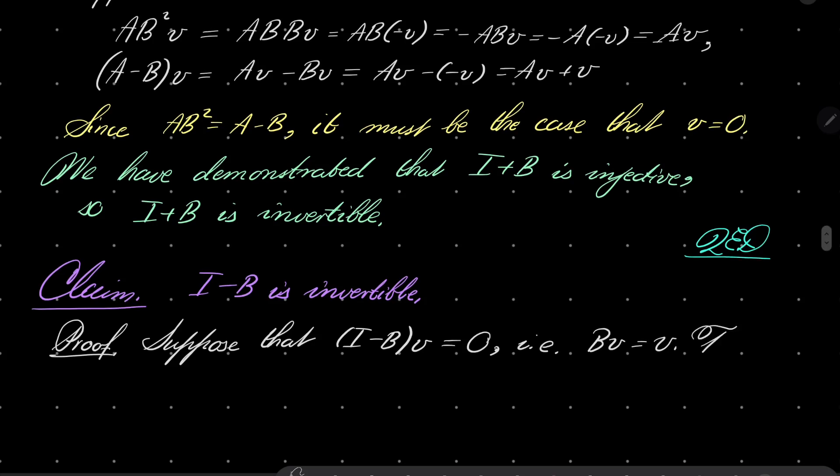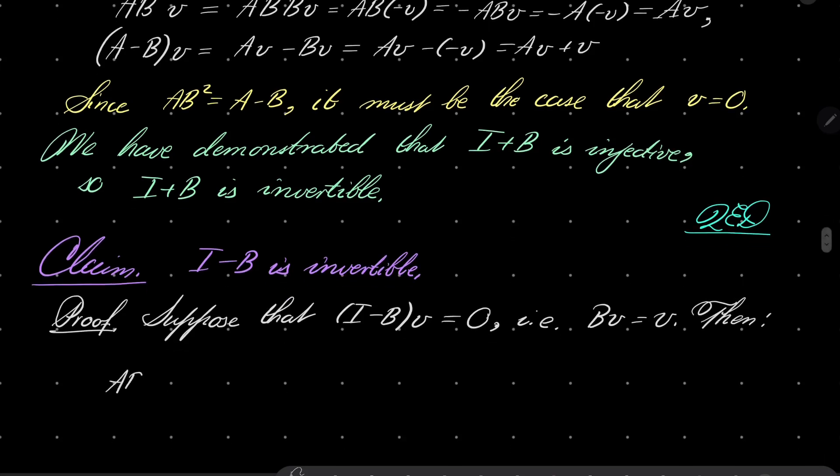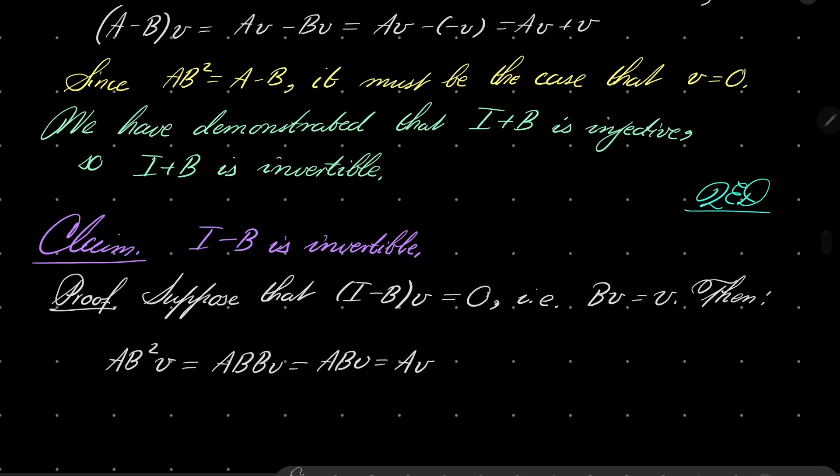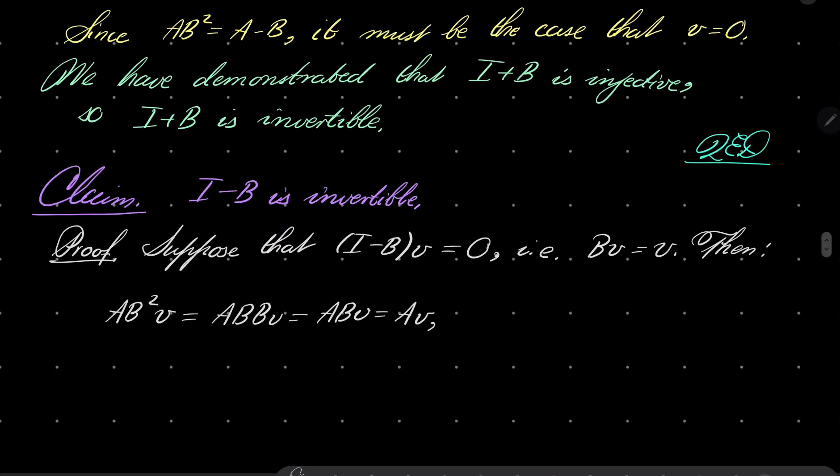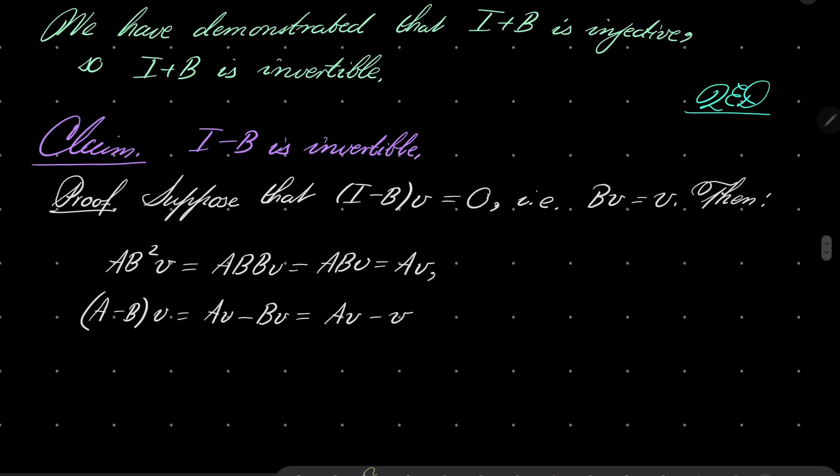Notice that then AB squared times V is A, B, B, V. So it's AB. B times V is V. Again, B times V is V. So it's AV. So it's AV minus V. And again, since AB squared is supposed to be equal A minus B,